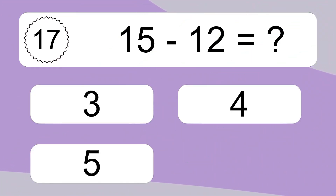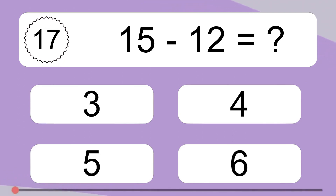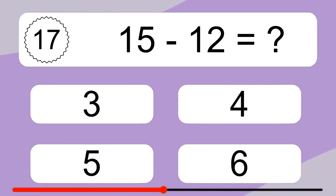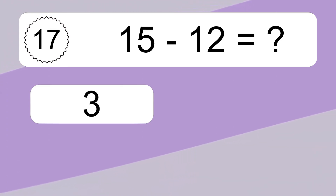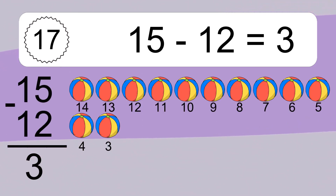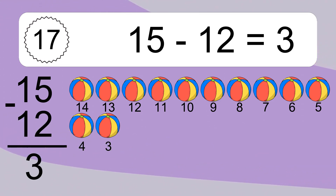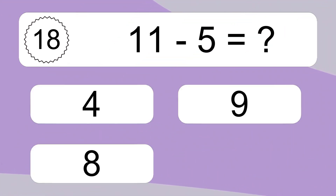15 minus 12 equals what? 15 minus 12 equals 3. Let's count it: 14, 13, 12, 11, 10, 9, 8, 7, 6, 5, 4, 3.